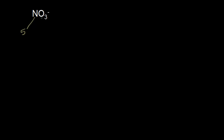First we need to calculate the total number of valence electrons. Nitrogen is in group 5 on the periodic table, therefore 5 valence electrons. Oxygen is in group 6, therefore 6 valence electrons for each oxygen. I have 3 of them, so 6 times 3 is 18. And I have a negative charge — this is an anion, so we have to add one electron to that.